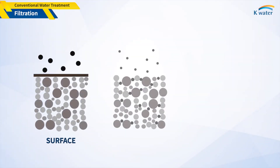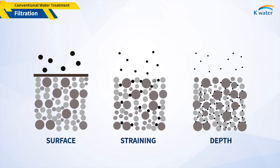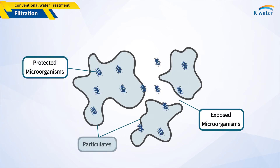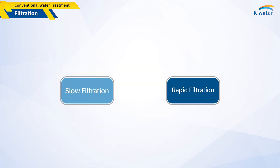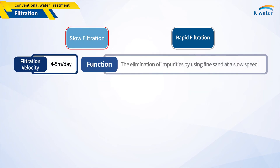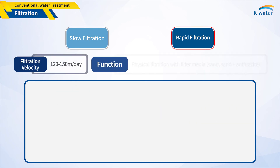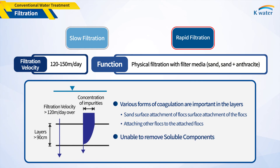Filtration is the final step to remove fine turbid matters not removed in the previous process, by passing water through sand and other filter media. This process ensures the safety and hygiene of tap water by removing micrometer-sized bacteria and turbid substances containing microorganisms. The process is divided into slow filtration and rapid filtration. Slow filtration removes impurities at a slow rate using fine sand, filtering out microorganisms, soluble substances, and suspended substances through a sand layer. Impurities are also removed by biofilms on the sand surface through absorption, oxidation, and decomposition.